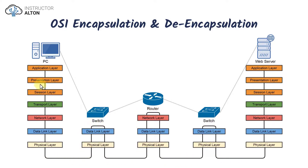That's a high-level overview of how data encapsulation and decapsulation works — not only with directly connected computers, but also with switches and routers in the path. That's going to conclude this video. I just wanted to help visualize this process with data encapsulation and decapsulation within the OSI model. If you have any questions, please let me know. Thanks for watching and I'll see you at the next video.